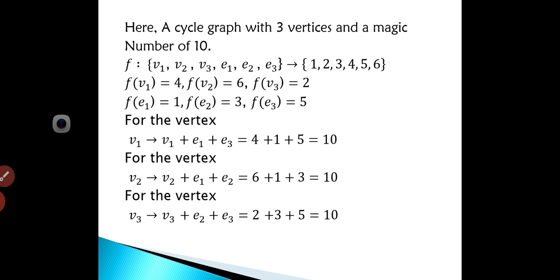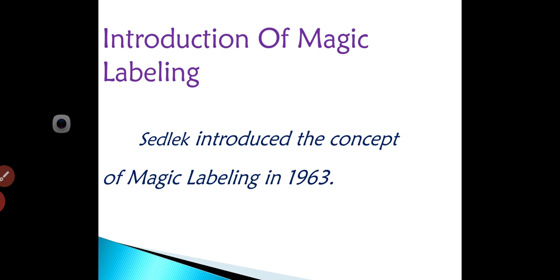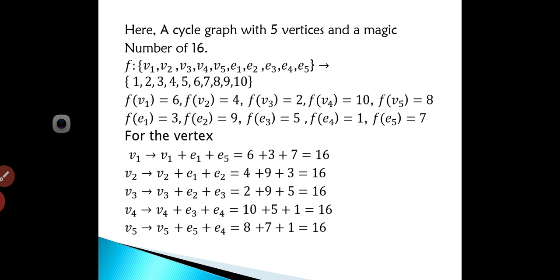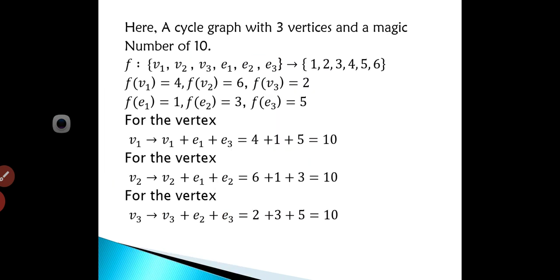Here all the vertices have a constant magic number 10, so it is vertex magic labeling, and the graph is called a vertex magic graph.